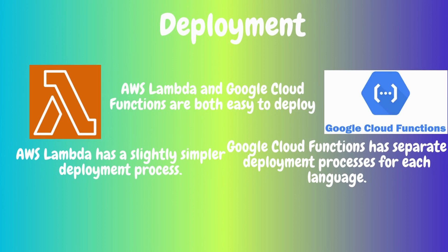From a deployment perspective, both AWS Lambda and Google Cloud Functions are easy to deploy. AWS Lambda has a slightly simpler deployment process with a single deployment process for all languages, while Google Cloud Functions has a separate deployment process for each language.